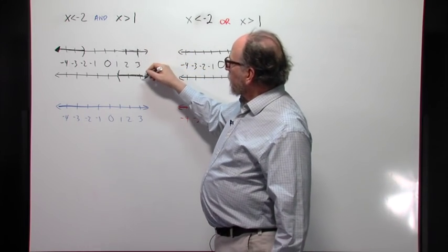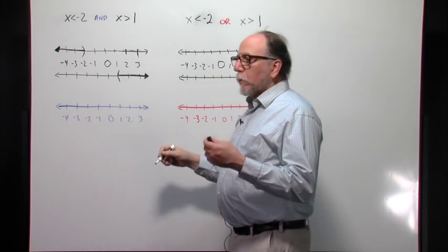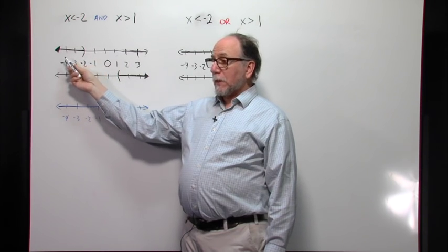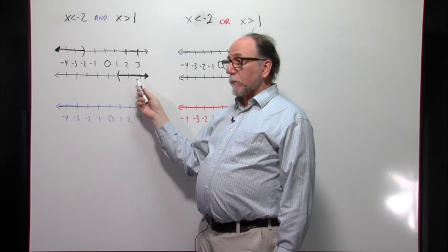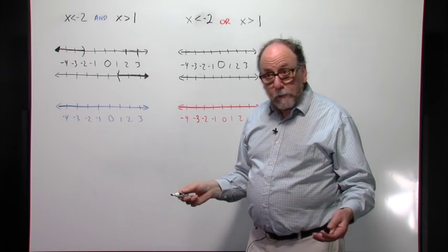So those are those two separate graphs. The one on the left is the first one and the one on the right is the second one. Now we're going to put those together. Where is it true that there is a number that is both less than negative 2 and greater than positive 1? Nowhere. Doesn't happen.